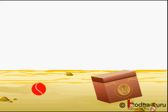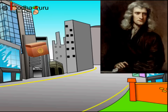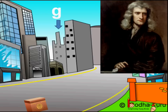When an object falls, its velocity increases rapidly because of gravity. It means the object accelerates. Actually, there is no change in the direction of the motion, so only change in the magnitude of velocity takes place. Change in velocity with time means acceleration is there. This acceleration is due to the earth's gravitational force.